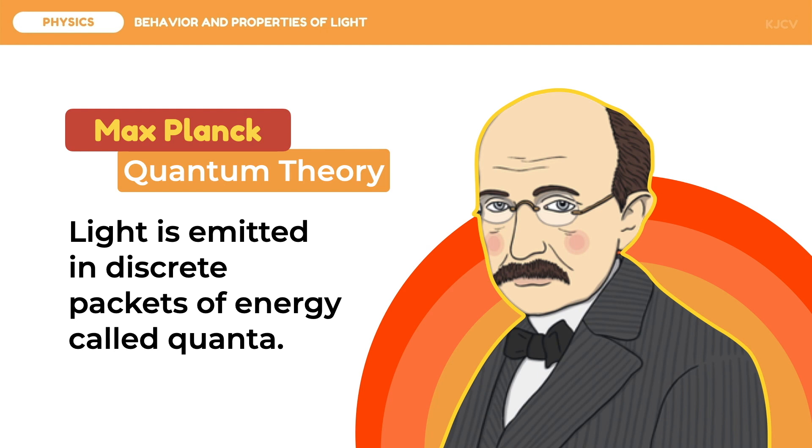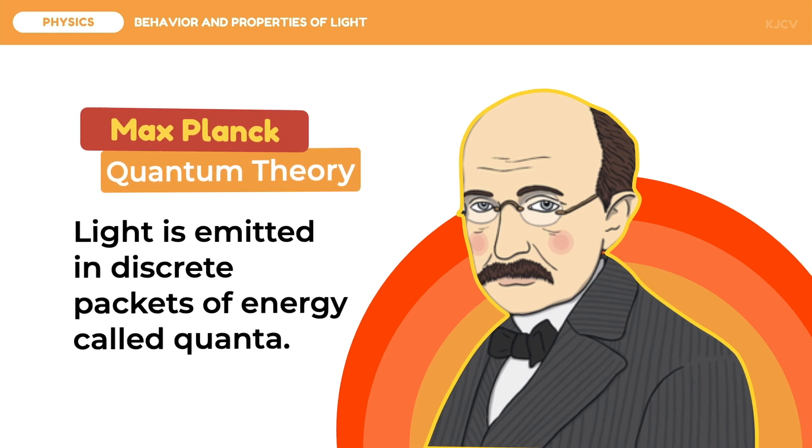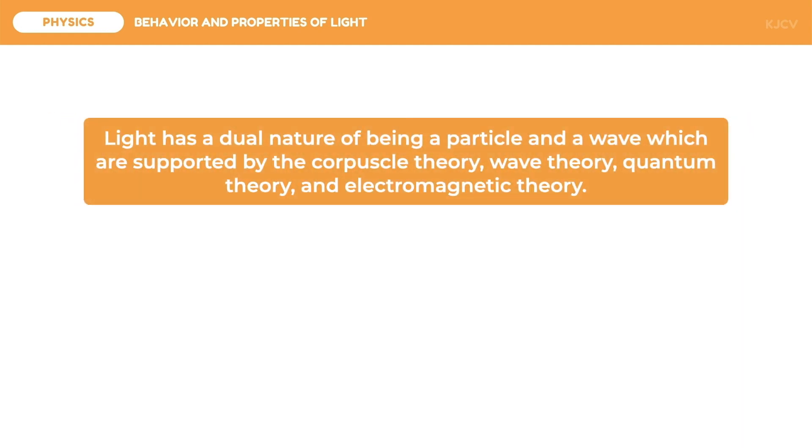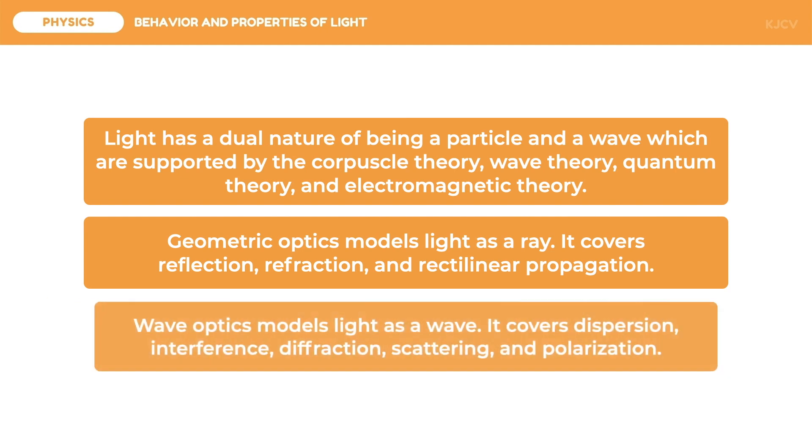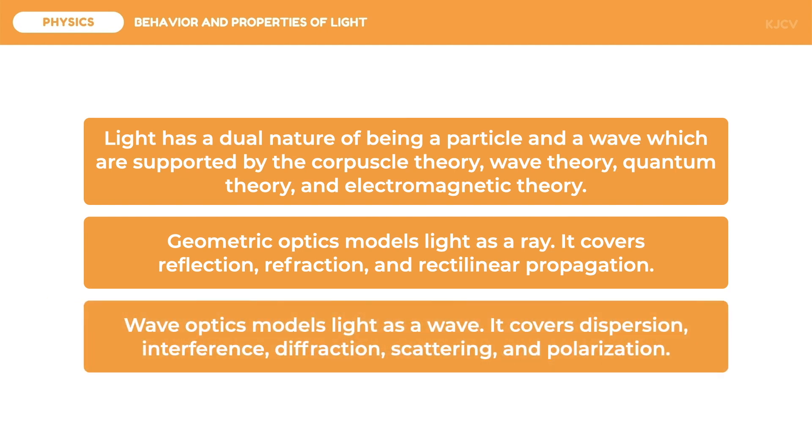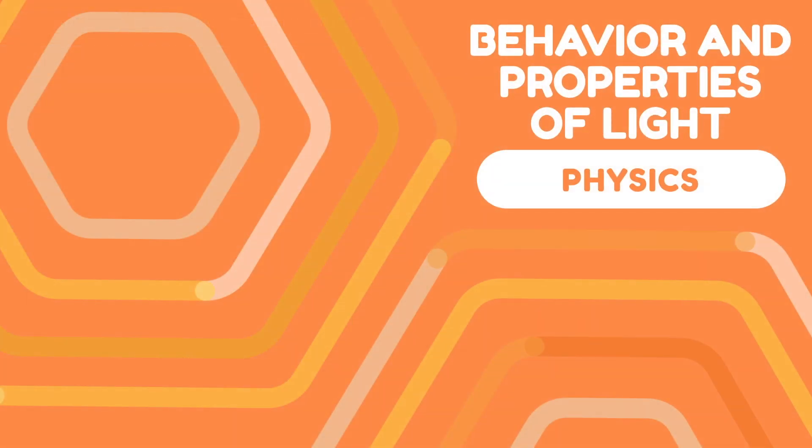To conclude this lesson, light is one of the most complex phenomena on earth as it behaves as a particle and a wave. This gives it several properties which are evident in our surroundings. To wrap up this lesson, let us review the following key points: light has a dual nature of being a particle and a wave which are supported by the corpuscular theory, wave theory, quantum theory, and the electromagnetic theory. Geometric optics models light as a ray. It covers reflection, refraction, and rectilinear propagation. And lastly, wave optics models light as a wave. It covers dispersion, interference, diffraction, scattering, and polarization. And that ends our discussion on the behavior and properties of light.